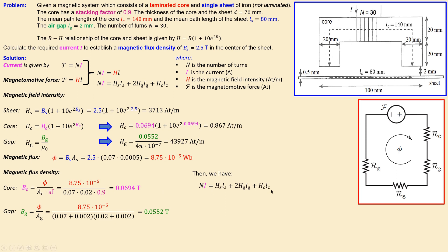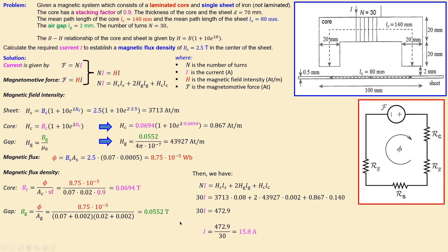Substituting all values into N×I = H_s×l_s + 2×H_g×l_g + H_c×l_c: with N = 30, H_sheet×0.08, two times the gap contribution ×0.002, and H_core times the core mean path length of 0.14. The right-hand side sums to 472.9, so 30×I = 472.9, giving I ≈ 15.8 amperes, approximately 16 amperes, to achieve 2.5 tesla in the sheet.